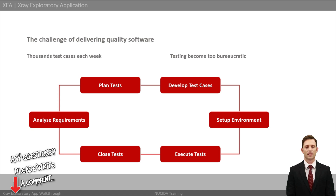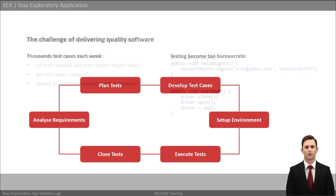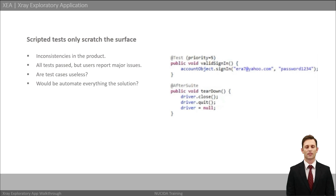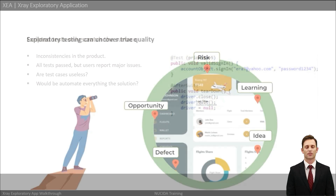We all know that delivering quality software is complicated — it's not just to write code, test and deploy at the end. In fact, we plan, write, execute and report thousands of tests each week to ensure that every release has the highest quality. Sometimes though, testing becomes too bureaucratic. Relying on scripted tests only scratches the surface: we start seeing product inconsistencies, users report major issues even though all tests have passed, and we feel that our test cases are useless.